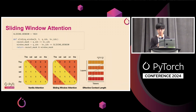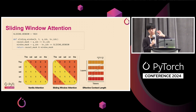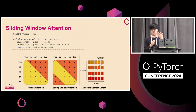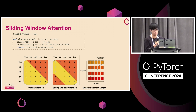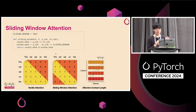Another variant people want is sliding window attention — like causal masking, but you also only attend to tokens that are relatively close to you, avoiding the quadratic complexity of attention. Popularized in Mistral's first model, this is super simple to implement with Flex Attention: you just check whether qindex minus kvindex is less than your sliding window size, and then combine the masks together.